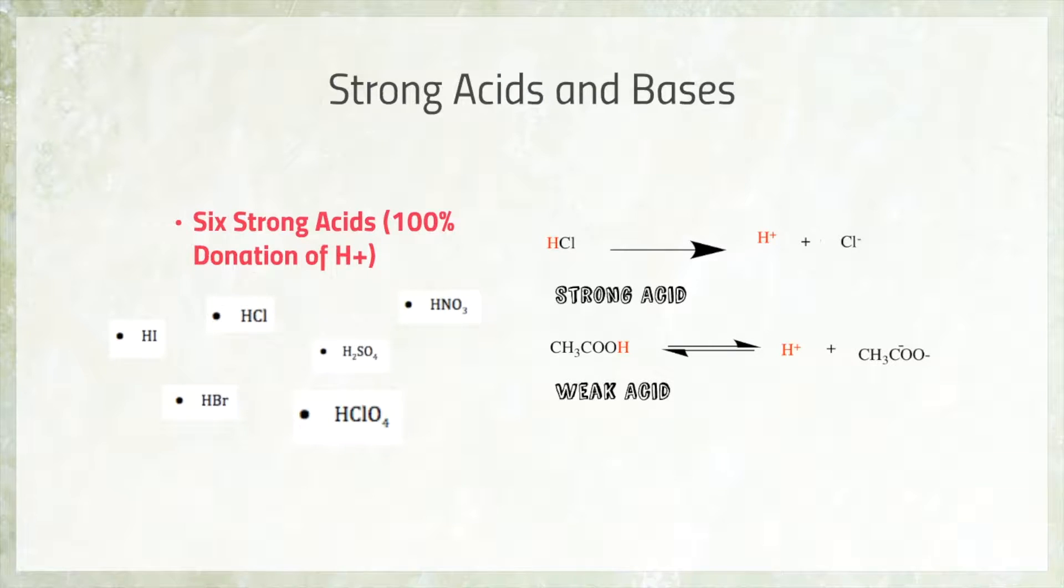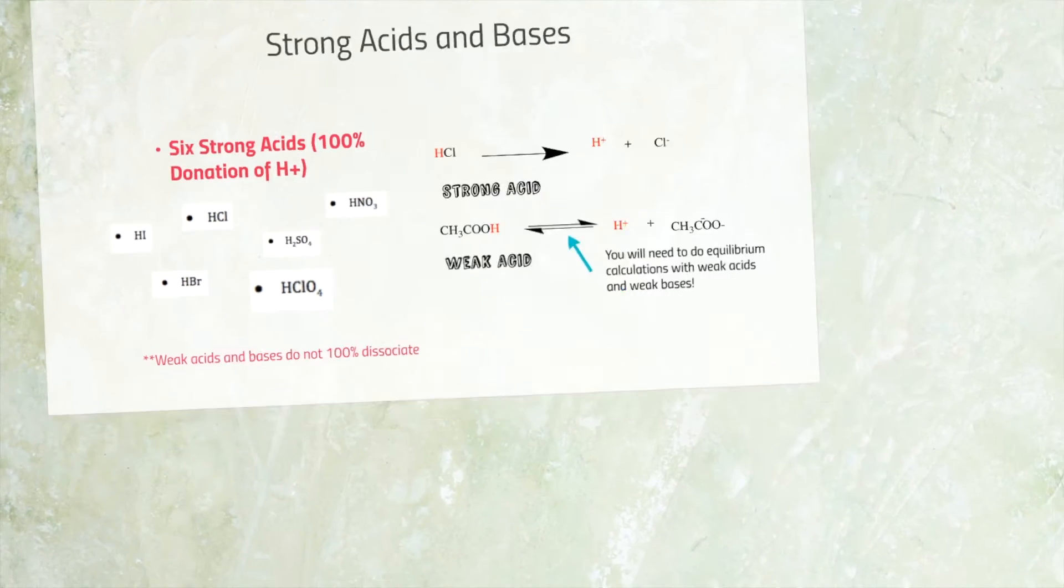For example, acetic acid or vinegar, pictured here. Weak acids will reach equilibrium far before they've donated all of their protons. For that reason, you will need to do equilibrium calculations with weak acids and weak bases and draw the double-headed arrow rather than the single-headed arrow to show their dissociation.